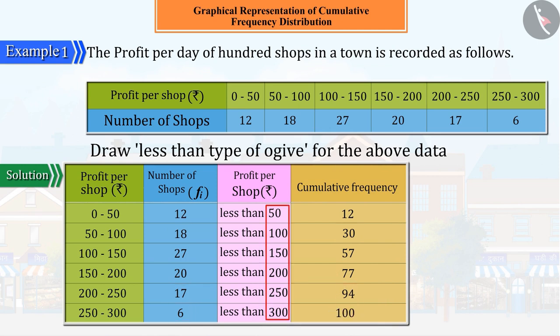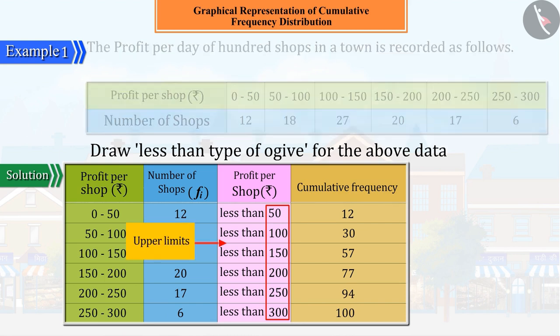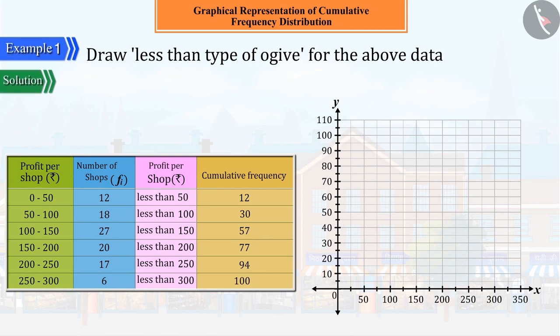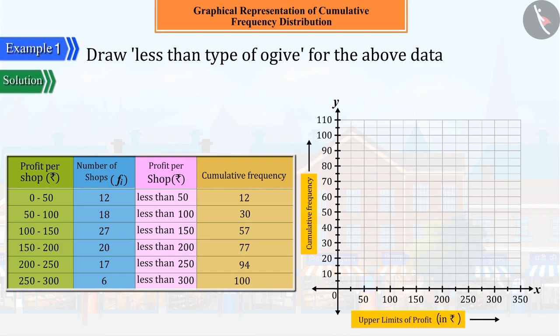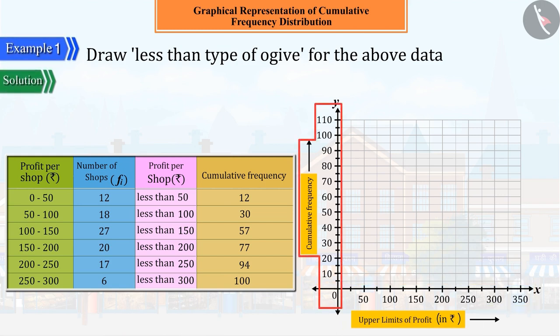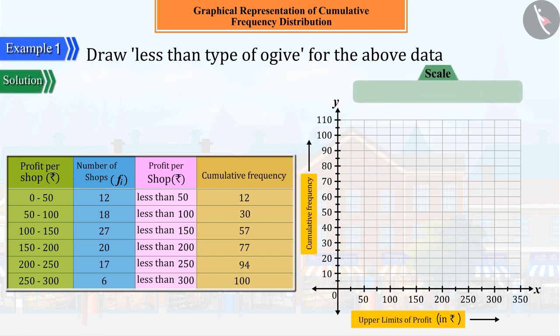Here you can see that 50, 100, 150, 200, 250 and 300 are the upper limits of the corresponding class intervals. To represent the data from the obtained distribution table graphically, mark the upper limits of profit on the x-axis in rupees and cumulative frequencies on the y-axis, where upper limits indicate profit and cumulative frequencies indicate the number of stores. Here, we take one square unit on the x-axis equal to 50 rupees and one square unit on the y-axis equal to 10 shops.